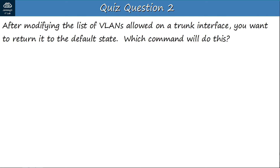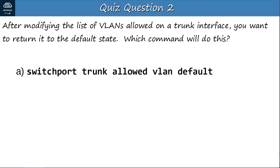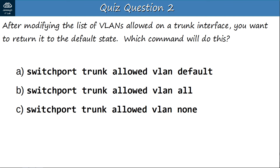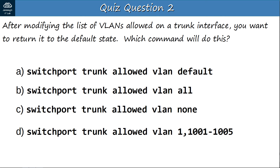Question 2: After modifying the VLANs allowed on a trunk interface, you want to return it to the default state. Which command will do this? A: switchport trunk allowed vlan default. B: switchport trunk allowed vlan all. C: switchport trunk allowed vlan none. D: switchport trunk allowed vlan 1,1001-1005. The answer is B — switchport trunk allowed vlan all. By default, all VLANs are allowed on a trunk port. Answer D lists the VLANs that exist on a Cisco switch by default, which is different from the VLANs allowed on a trunk by default.